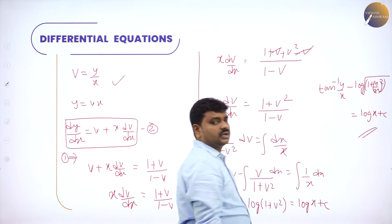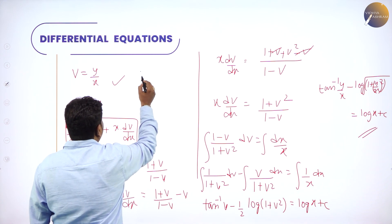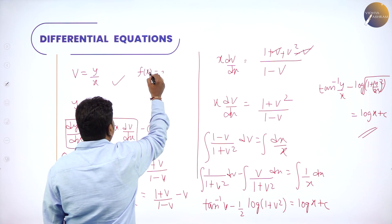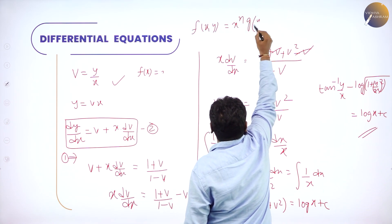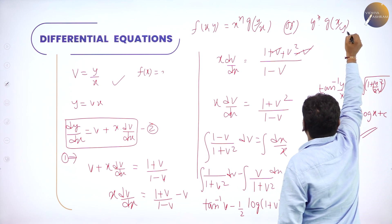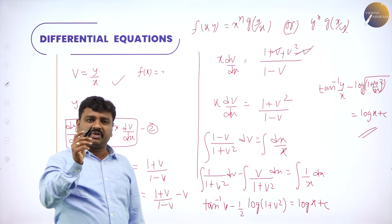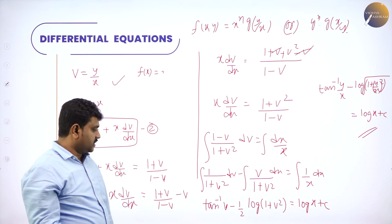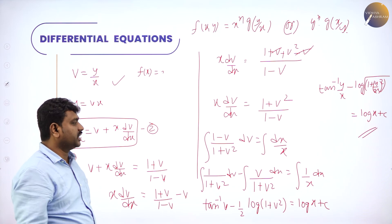Homogeneous means f(x, y) can be written as x-power-n times g(y/x) or y-power-n times g(x/y). Every term in numerator and denominator should have the same degree — x·y means x-power-1 times y-power-1, put together degree 2. So to solve: conclude homogeneous, put y = vx, differentiate, substitute, and you get the answer. I hope all of you understood homogeneous equations. I will see you in my next session. Thanks for attending.